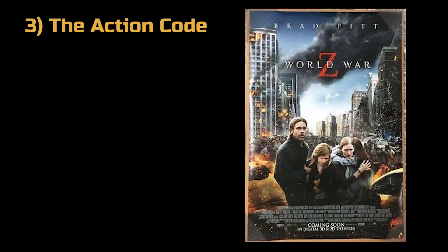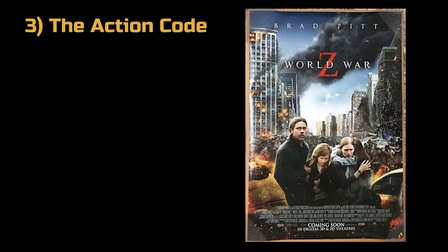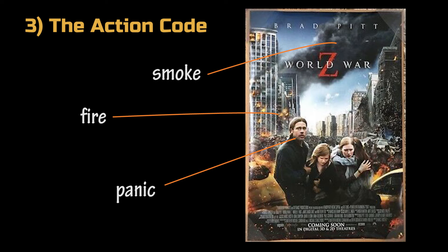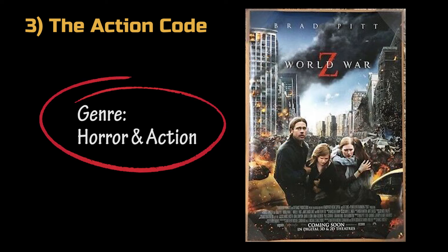The action codes are the actions that contribute to the progression of the story. From this poster, we can see that the characters look panicked and behind them are fire and smoke. We can guess that the genre of the movie should be horror and action.